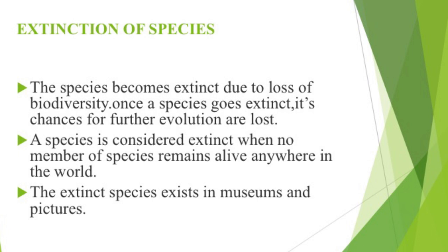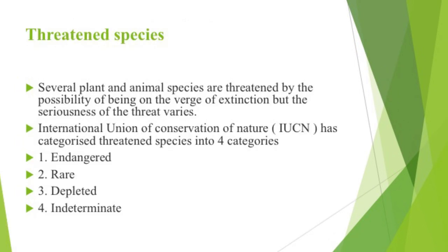The extension of species: species become extinct due to the loss of biodiversity. Once a species goes extinct, its chances for further evolution are lost. A species is considered extinct when no member remains alive anywhere in the world. The IUCN has categorized threatened species into four categories: endangered, rare, depleted and indeterminate.